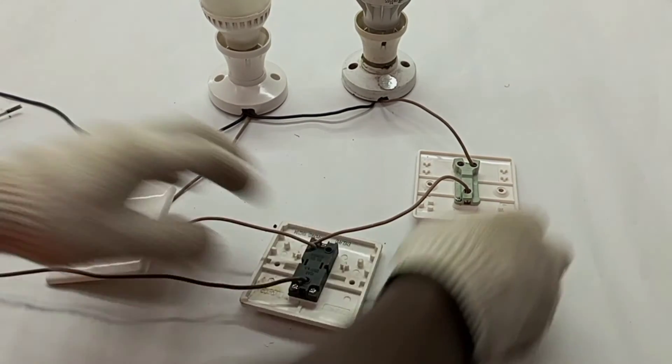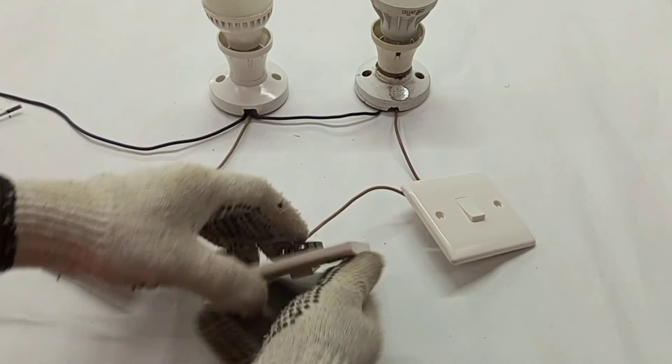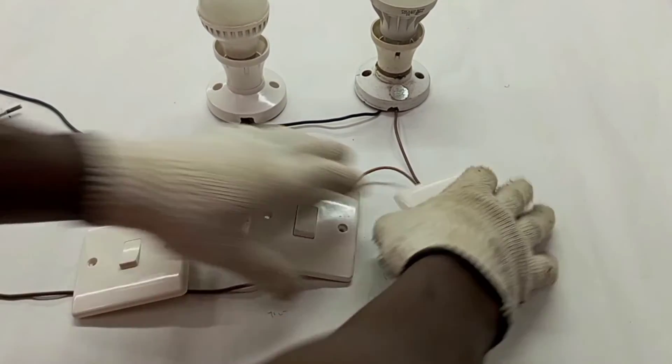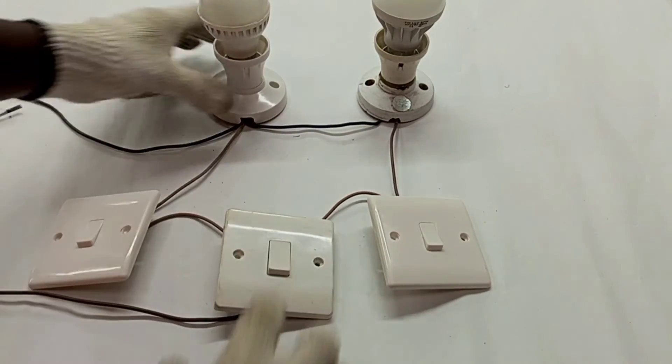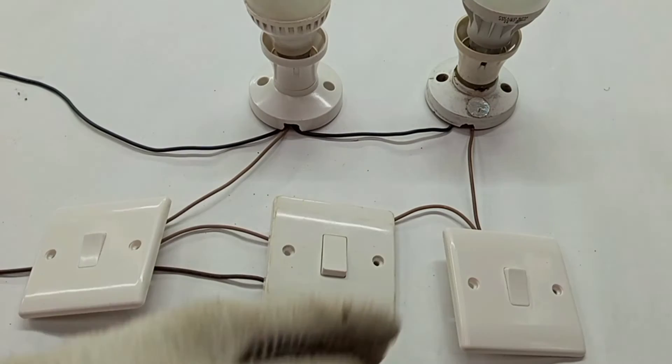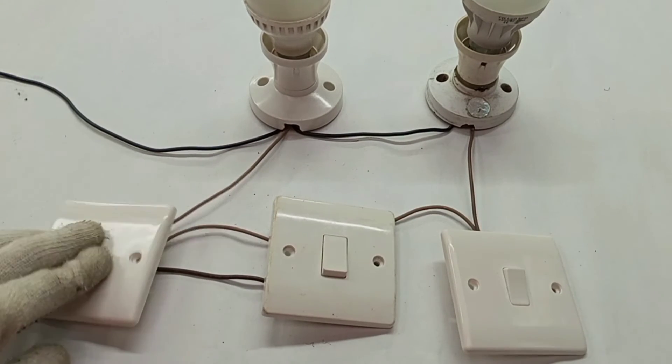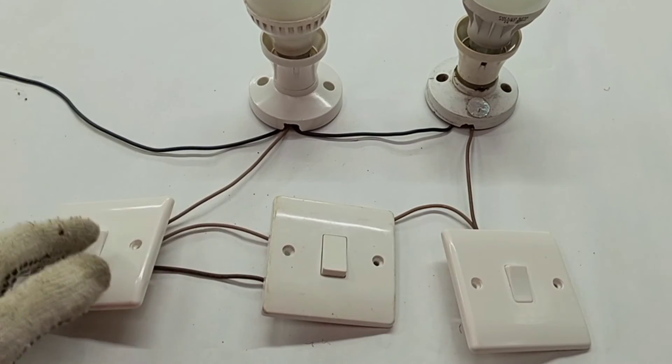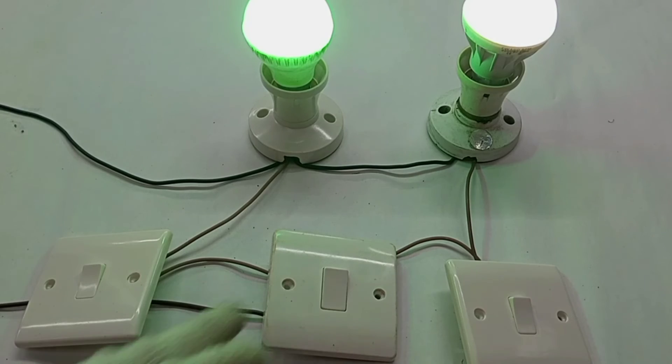We can turn them like this, turn them like this. So now these two switches are not working because the master switch is off. If the master switch is off, there is no way these lights will come on.